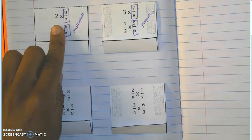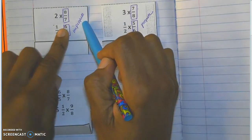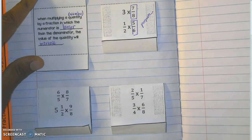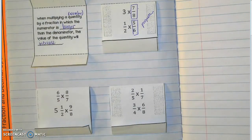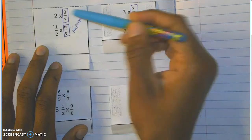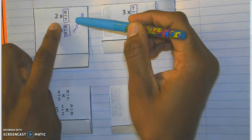When I multiply two times eight-sevenths — eight-sevenths is an improper fraction — it says that when multiplying a number by a fraction in which the numerator is larger than the denominator, that's what an improper fraction is, the value of the quantity will increase. That means when I multiply two times eight-sevenths, my product is going to be greater than my initial quantity of two.